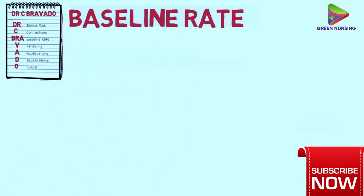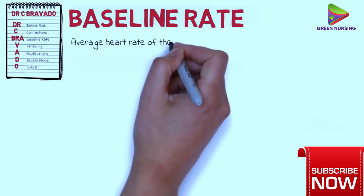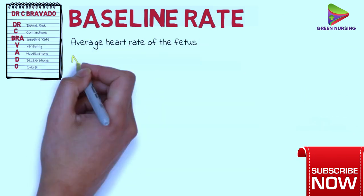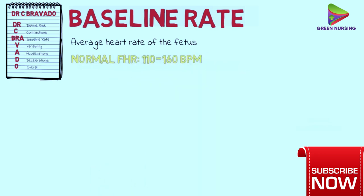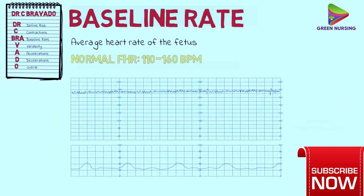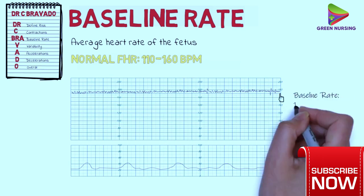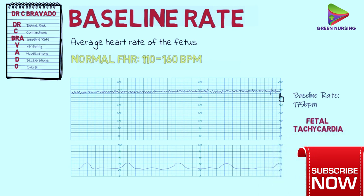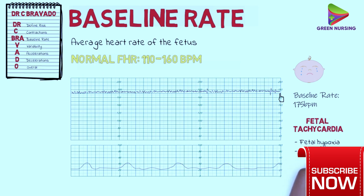Next, we've got the baseline rate, which refers to the average heart rate of the fetus. The normal heart rate ranges from 110 to 160 beats per minute. In this CTG, the baseline heart rate would be around 140 beats per minute, which is normal. In this CTG, the baseline heart rate is around 175 beats per minute, which is above the normal range and referred to as fetal tachycardia. Causes include fetal hypoxia and chorioamnionitis. We always check maternal temperature in these cases, because if febrile, this is a further pointer towards possible chorioamnionitis.